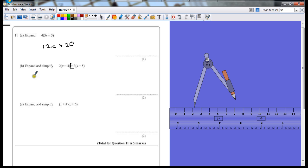So 2 times x is 2x. 2 times minus 4 is minus 8. Plus 3 times x is plus 3x. And plus 3 times plus 5 is going to give us plus 15. That potentially is one mark.